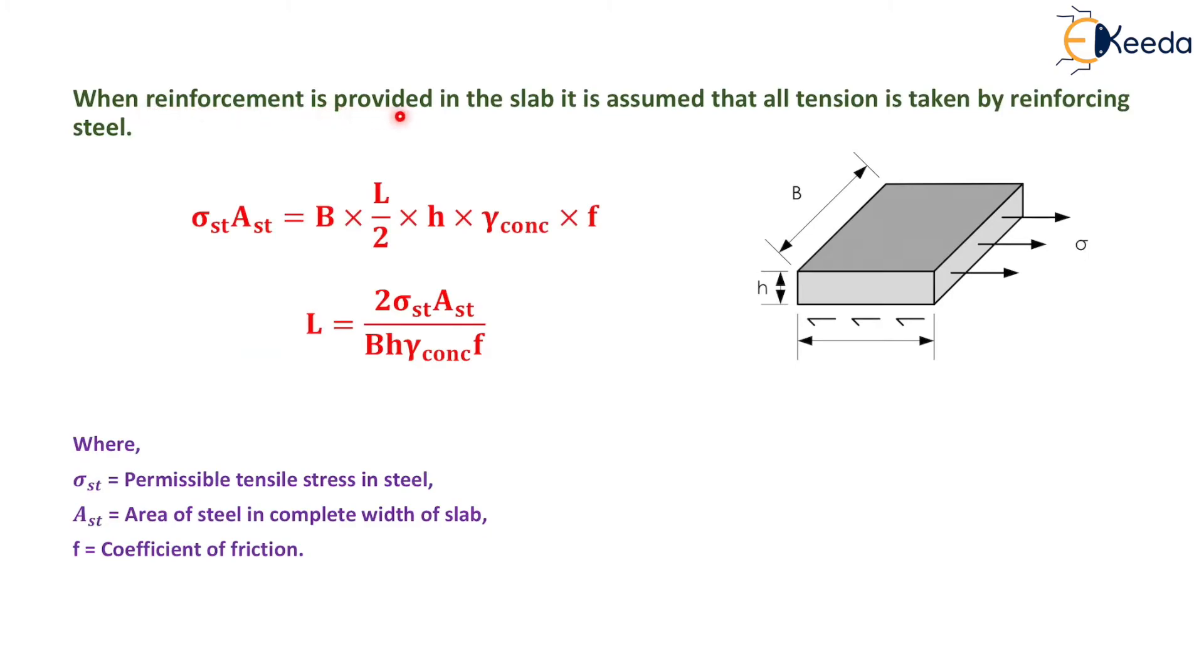When reinforcement is provided in the slab, it is assumed that all tension is taken by reinforcing steel only. Therefore, σst·Ast = B·(L/2)·H·γconcrete·f. So L = 2σst·Ast/(B·H·γconcrete·f).